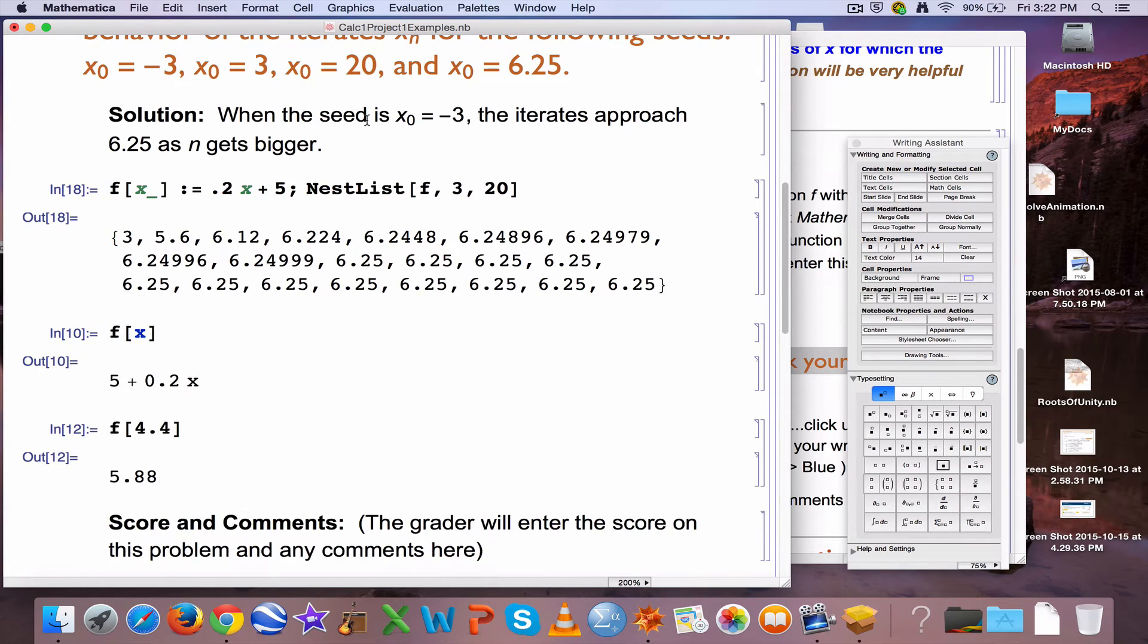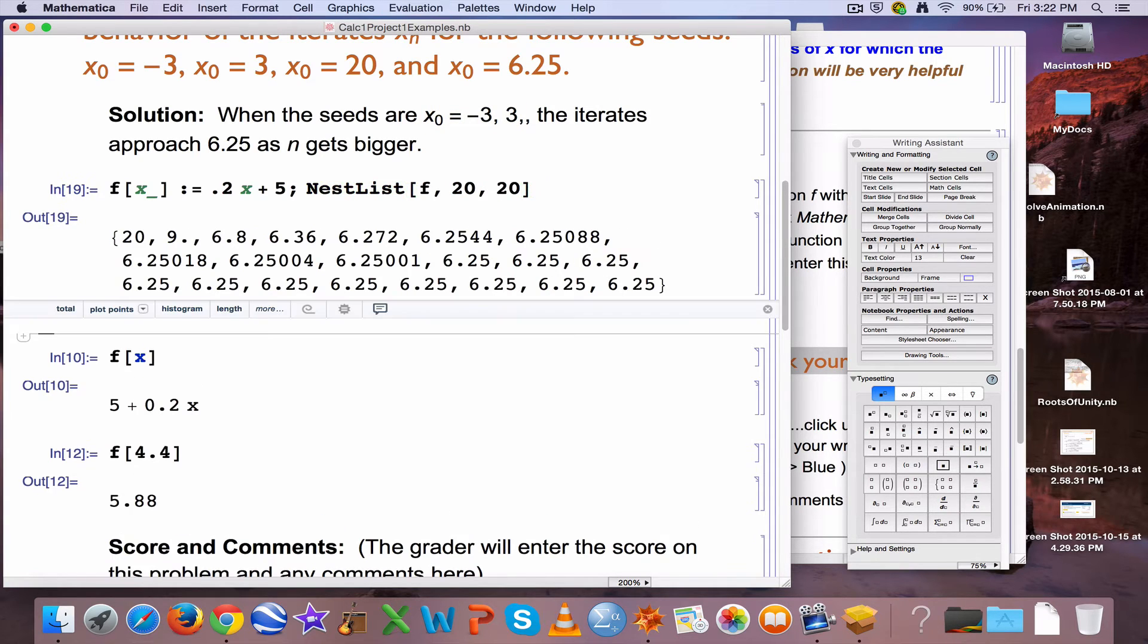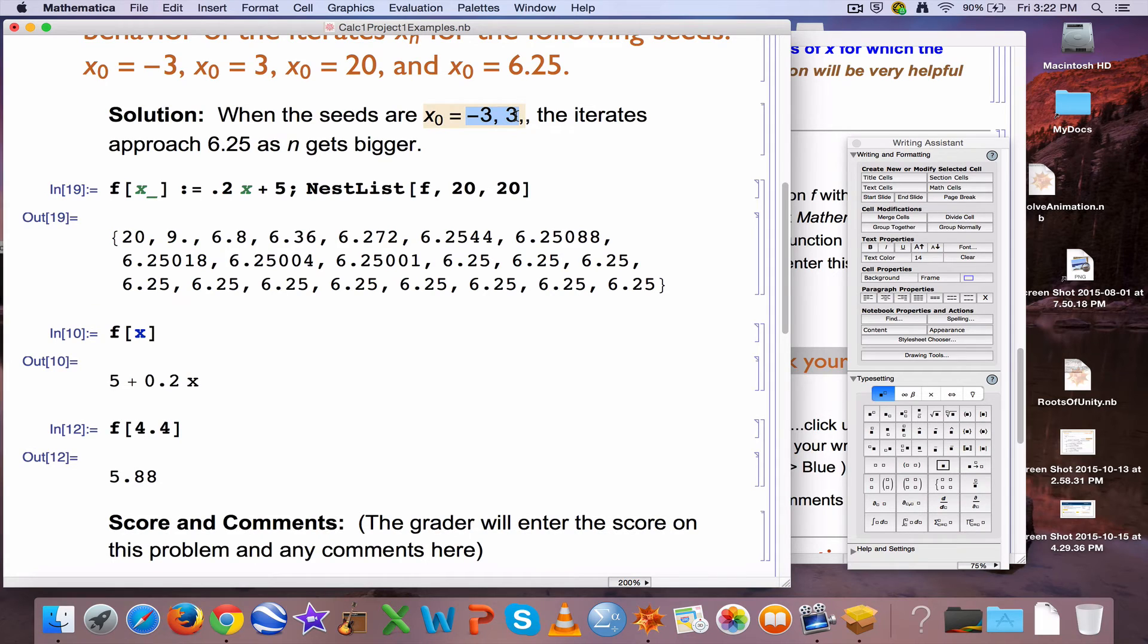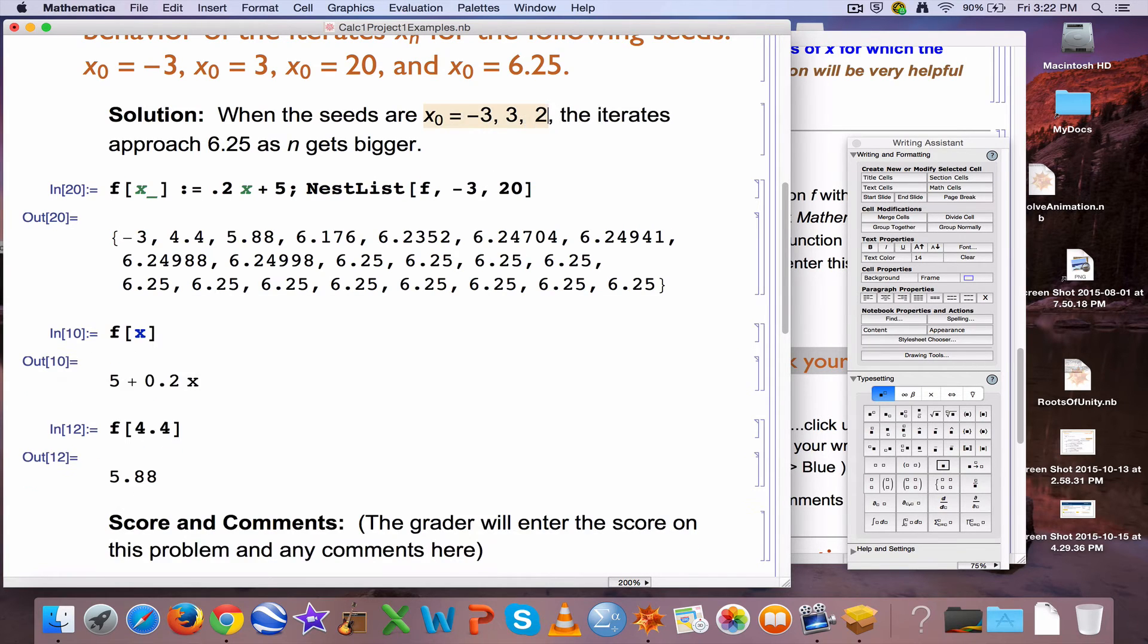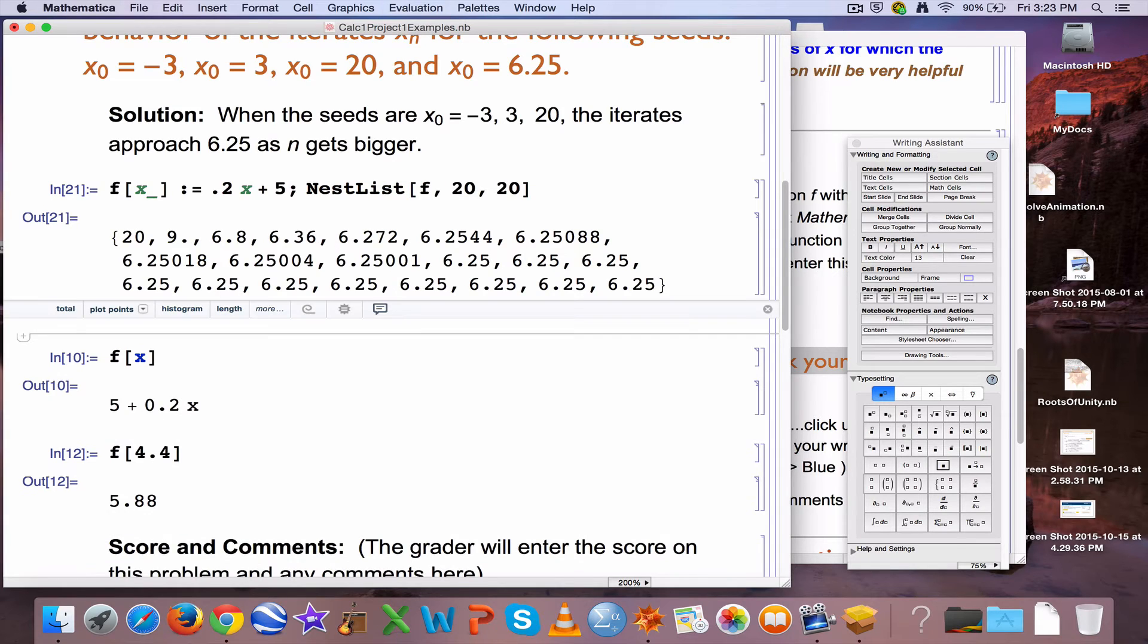So, you can now modify the answer a bit and say, when the seeds are negative 3, 3, how about 20? Does 20 do the same thing? Change this 3 to a 20? Yeah, amazingly. Still approaching 6.25, though it's approaching it differently. The seeds negative 3 and 3 were below 6.25, and the iterates increased toward 6.25. However, 20 is bigger than 6.25, and the iterates decreased toward 6.25.